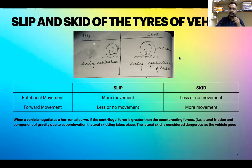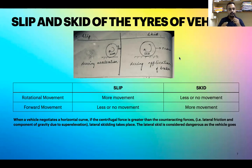Slip and skid are important concepts. When a tire is rotating but there is no forward movement, that is called slip. When you apply the brakes and there is no rotation of the tire but the vehicle is still moving forward, that is called skid. These terms are not interchangeable — for slip there is more rotational movement and less longitudinal movement, while in skid there is more longitudinal movement and less rotation.